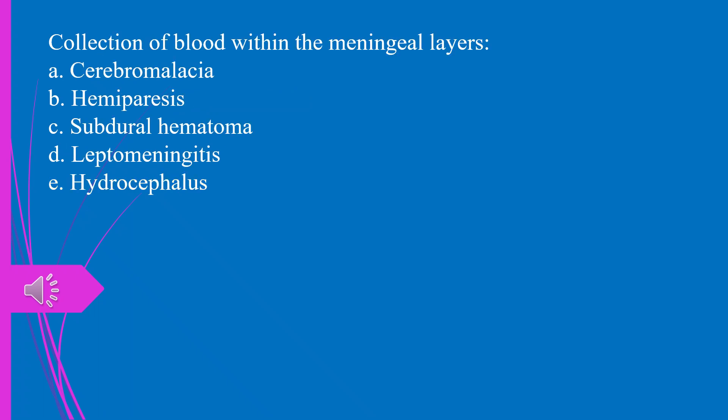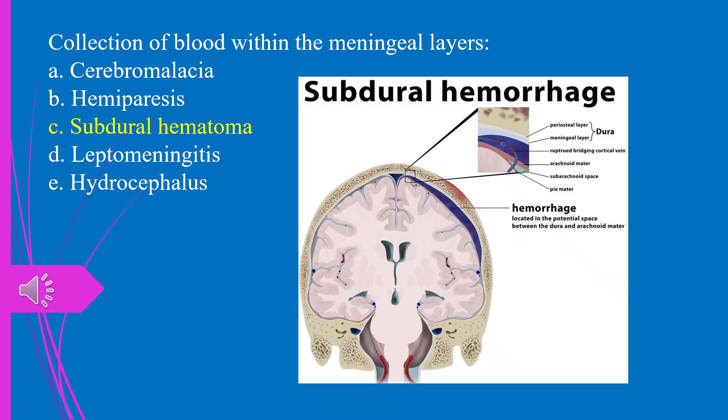Collection of blood within the meningeal layers, A. Cerebromalacia. B. Hemiparesis. C. Subdural hematoma. D. Leptomeningitis. E. Hydrocephalus. The answer is C. Subdural hematoma.